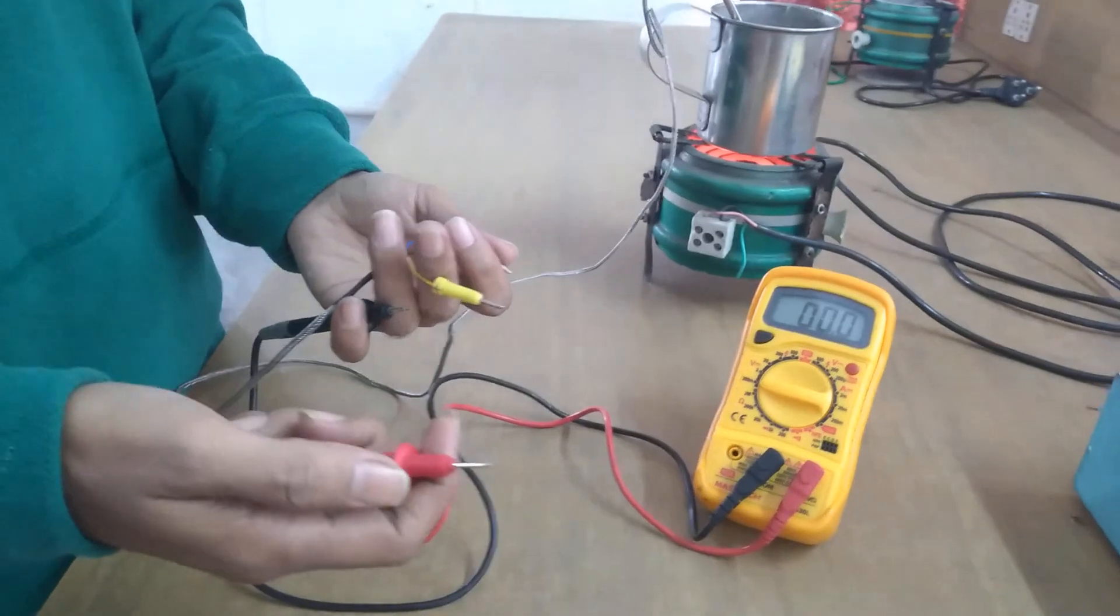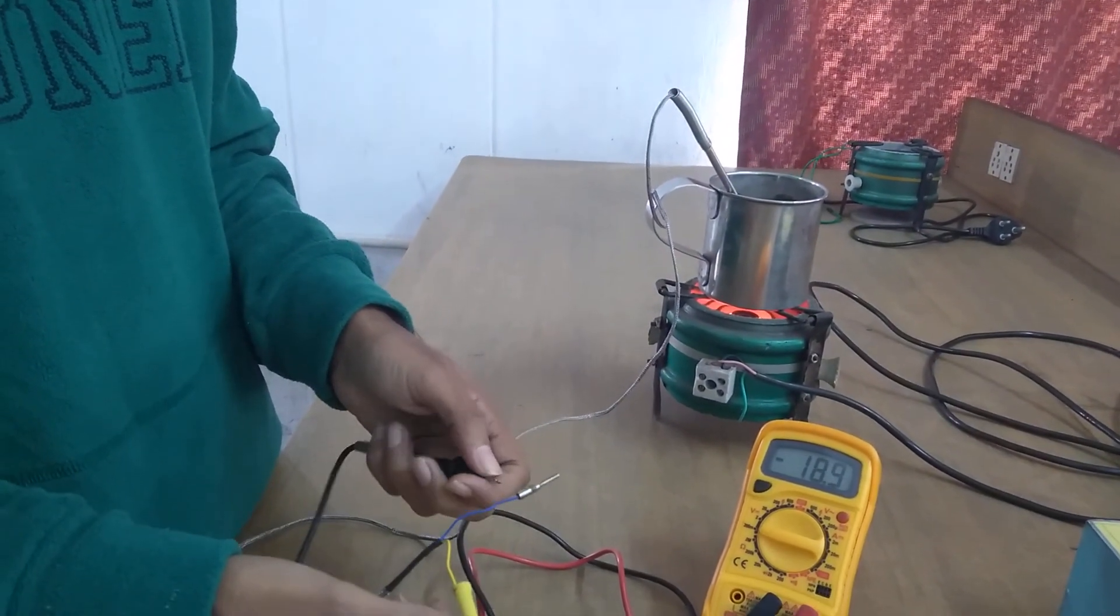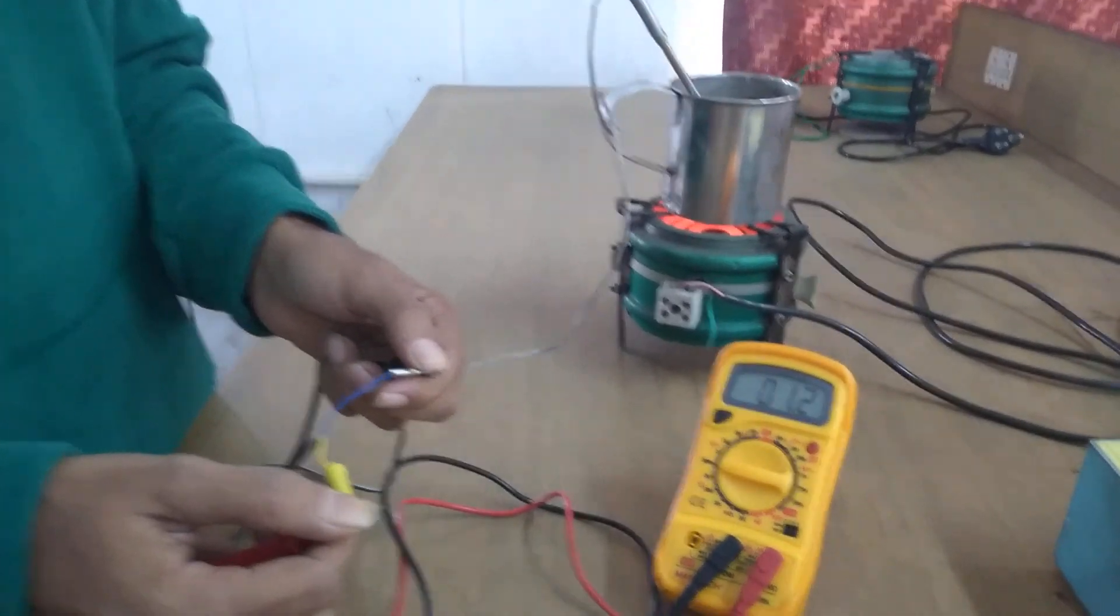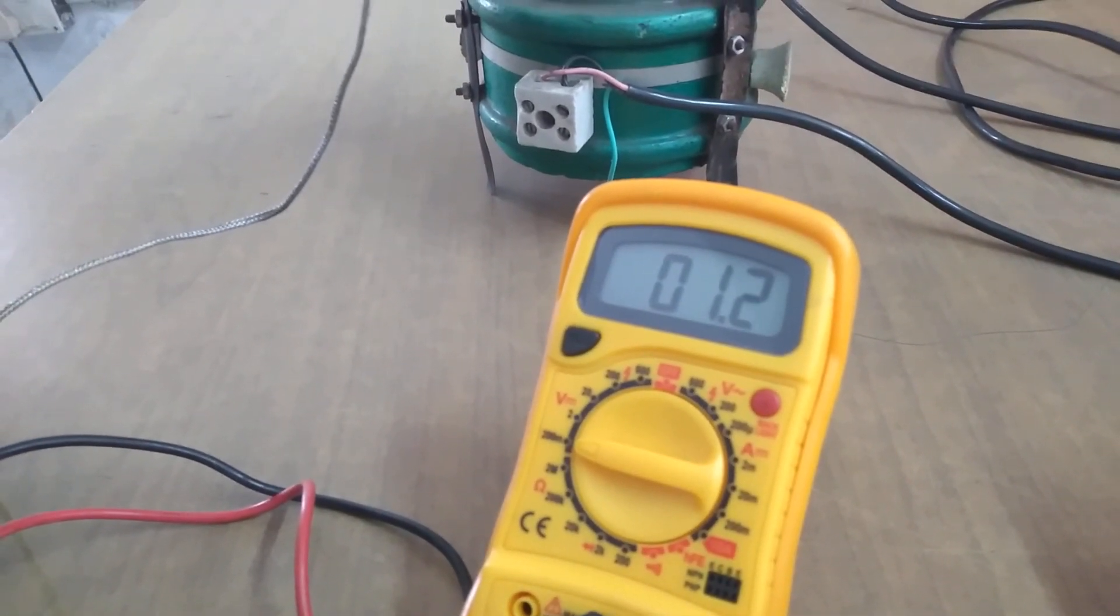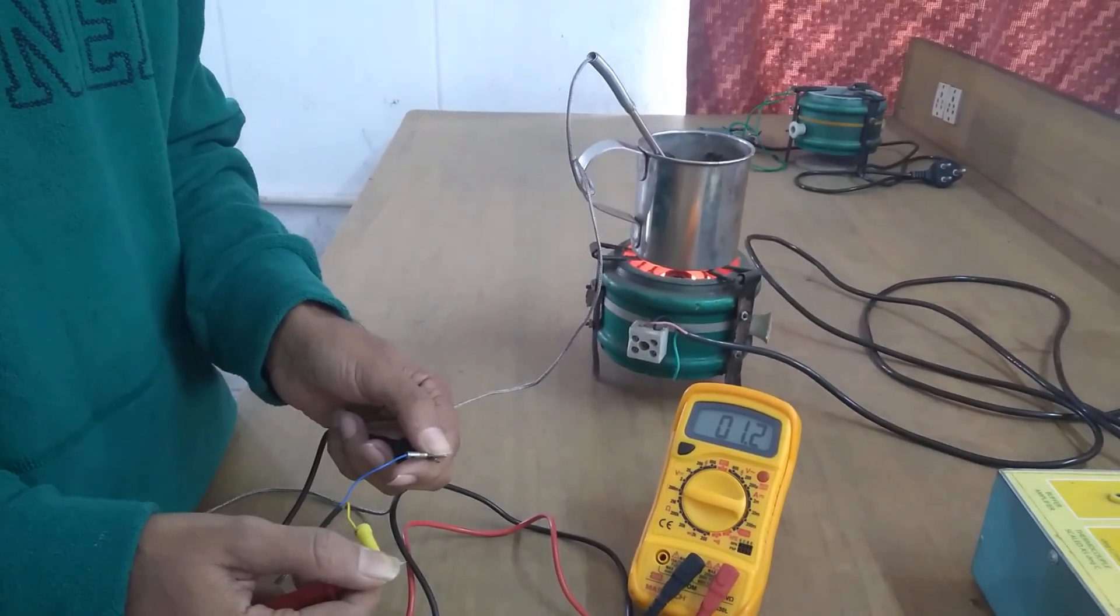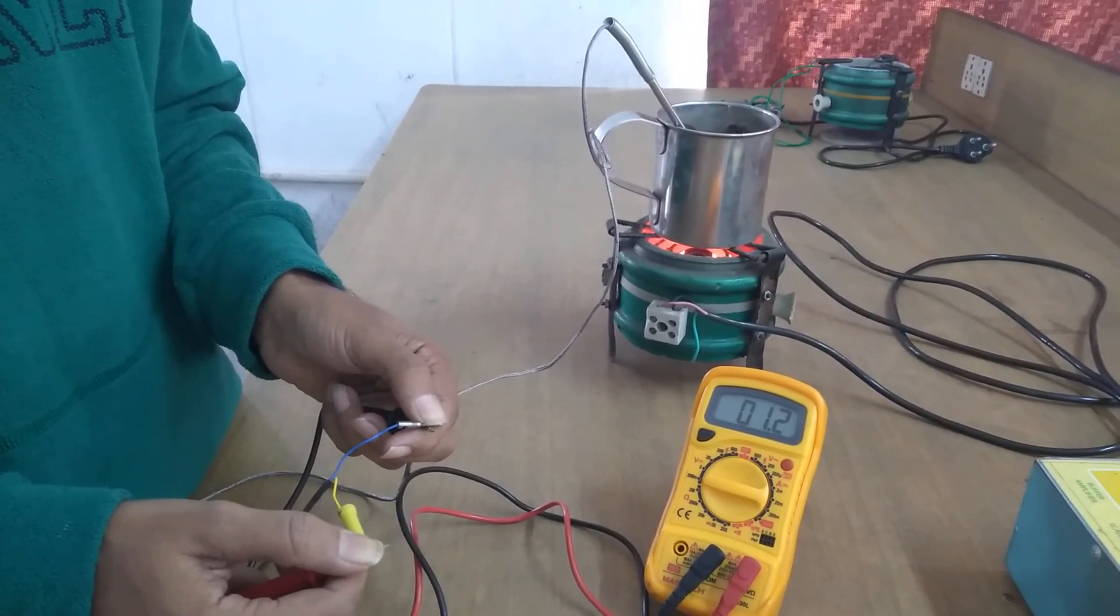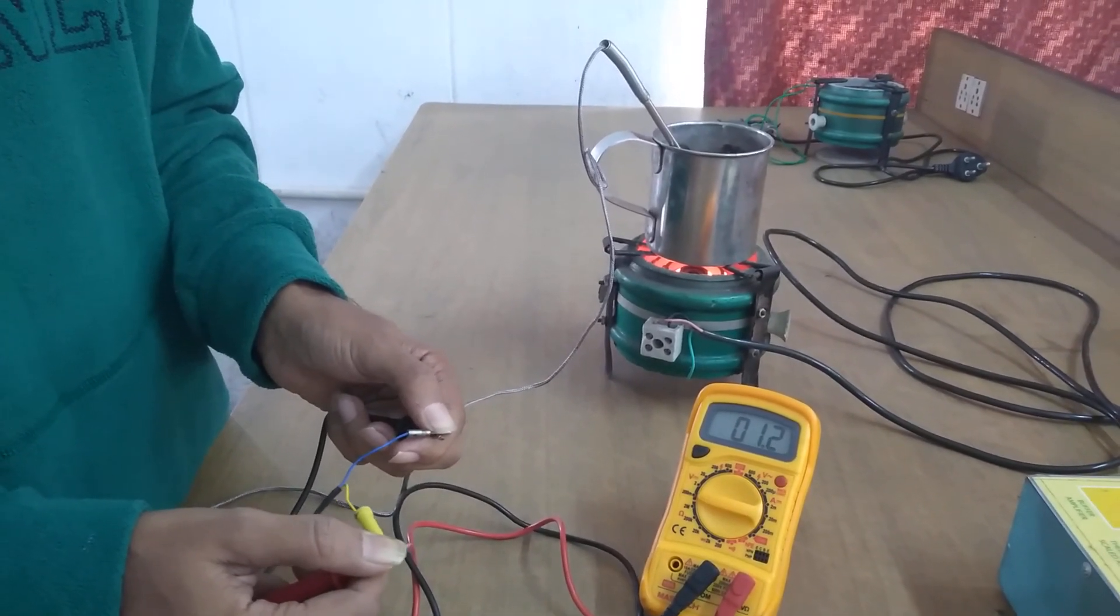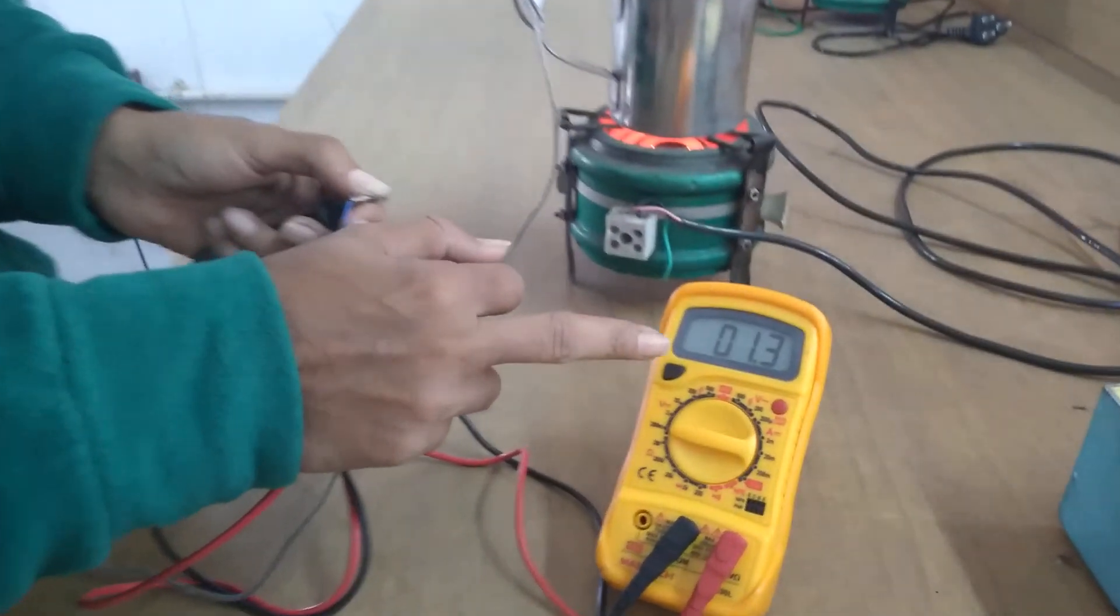So as before we make the connection of red to yellow and black to blue. And currently what you find is that the DC voltage that is available from this thermocouple for this particular temperature value in the process tank is 1.2 millivolts. And as temperature rises you will find that this value will keep on increasing.